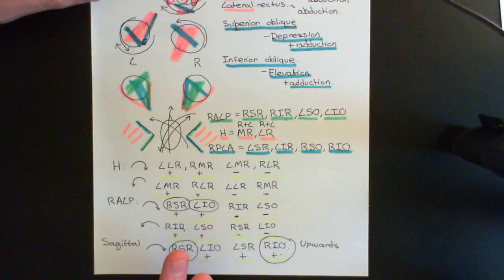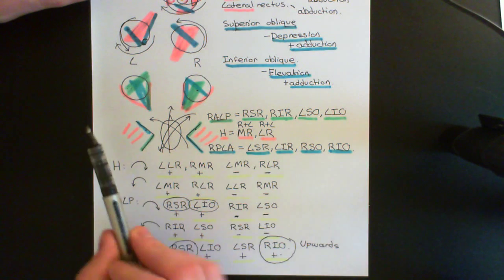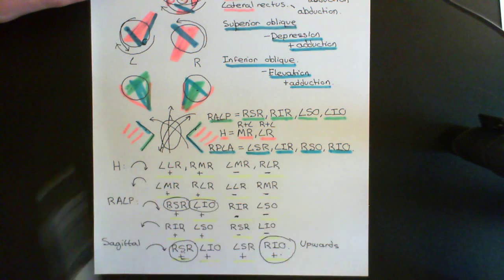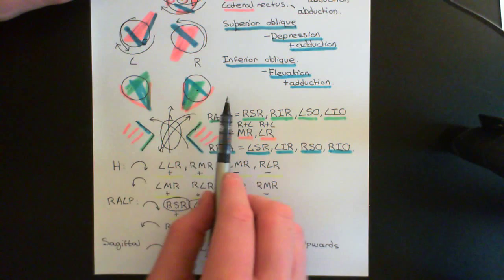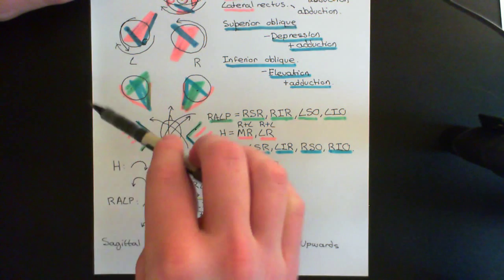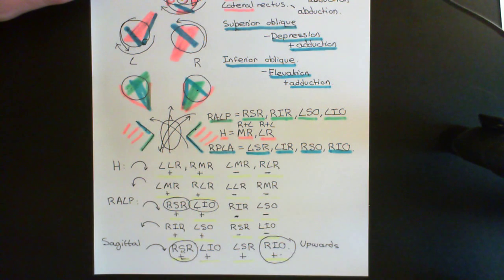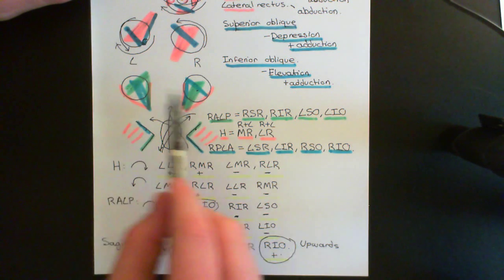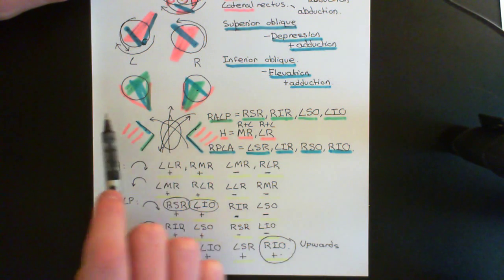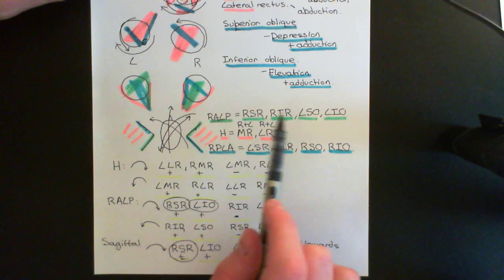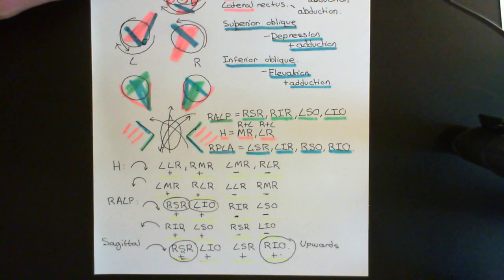The key concept to understand is that we have three planes which contain pairs of semicircular canals: the horizontal plane, the RALP plane, and the RPLA plane. Each of the 12 extraocular muscles on both sides lies in one of these planes, and four muscles lie in each of the planes.